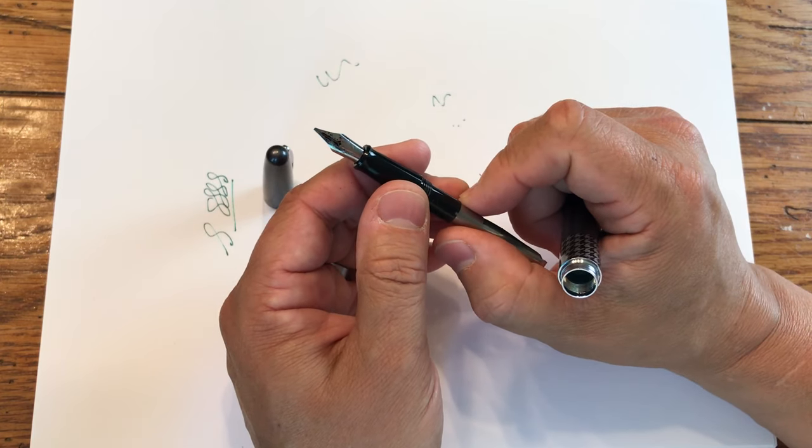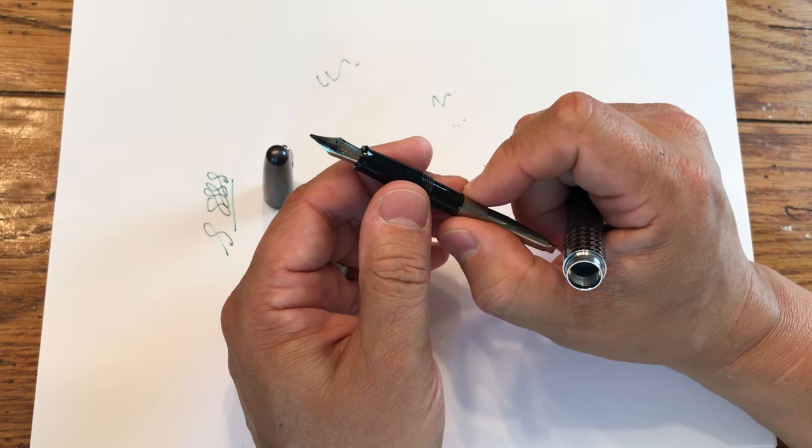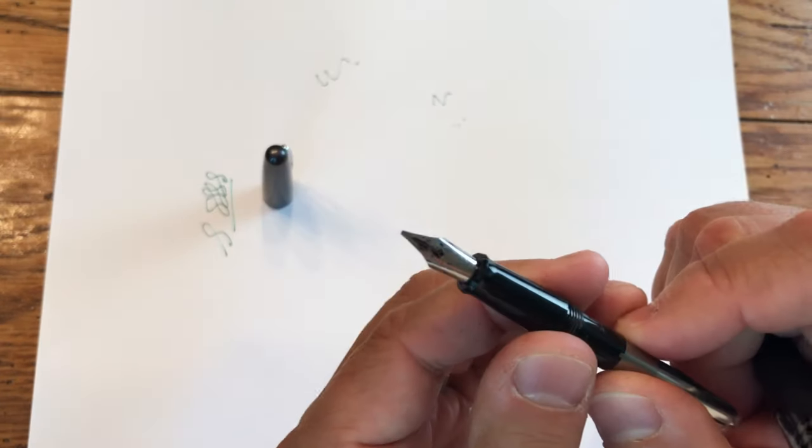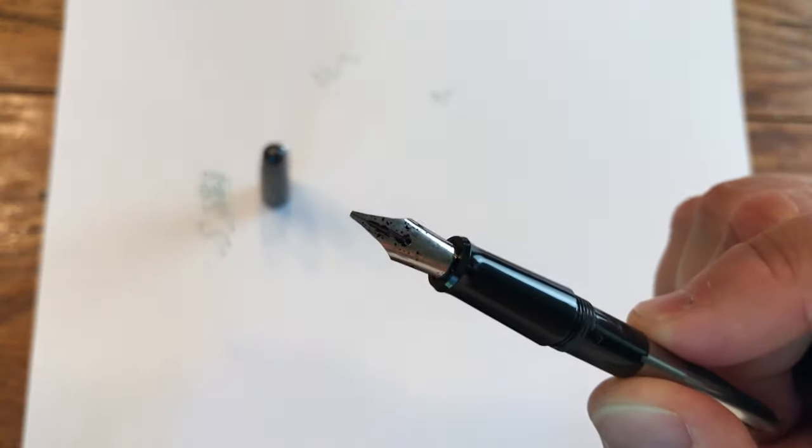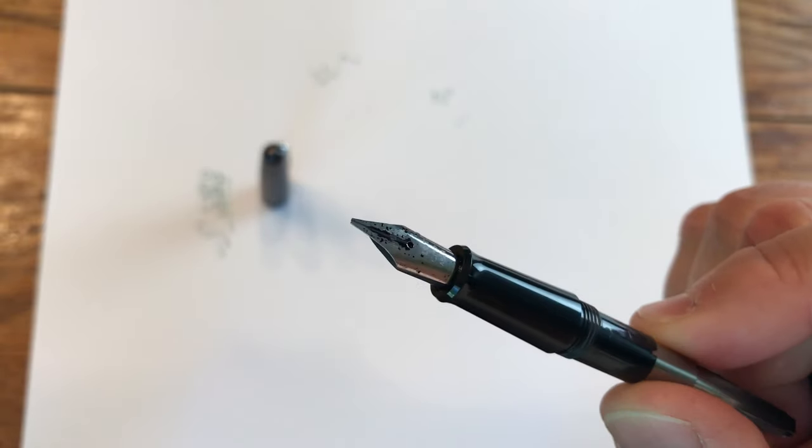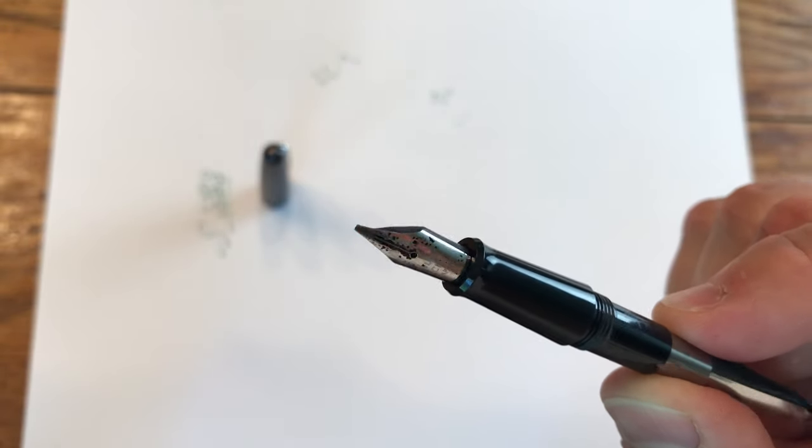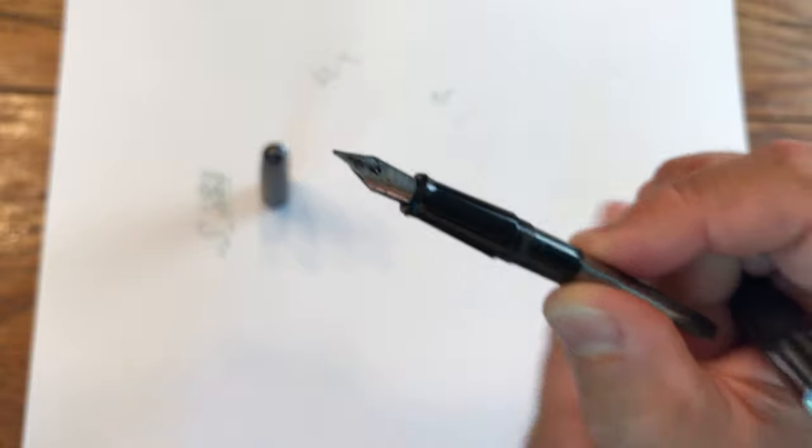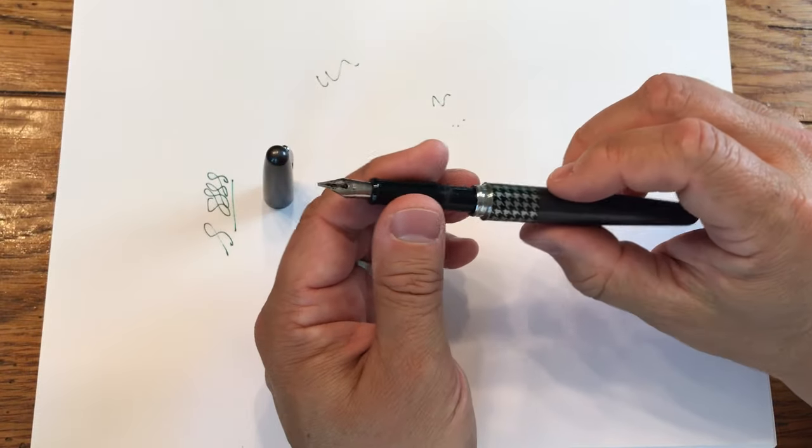This particular pen has a nib that is a stub nib. See how it's square on the end, which is an excellent tool to use when you write. It ends up writing a little bit of italic.